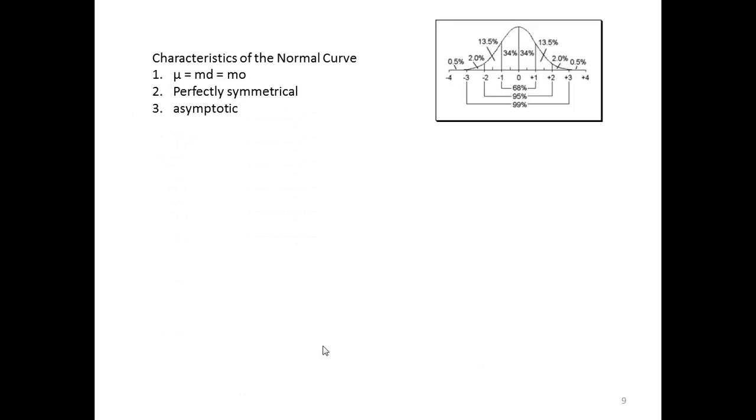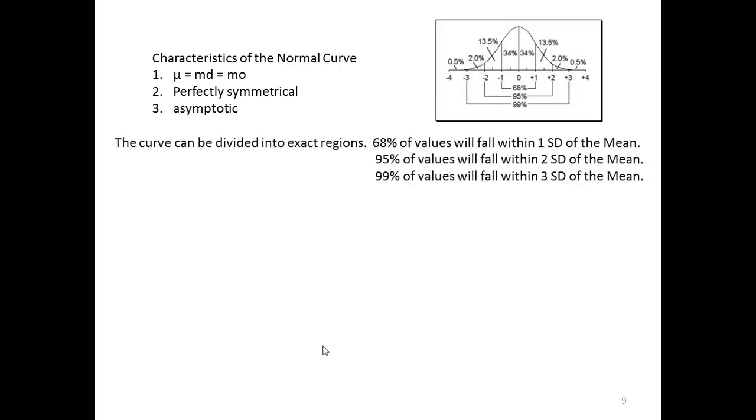So let's think about characteristics of a normal curve in the large population. The mean and the median and the mode are all equal. It's perfectly symmetrical, and the tails are asymptotic. We also know that the curve can be divided into exact regions. 68% of any of the values in our sample are going to fall within one standard deviation of the mean. 95% of values will fall within two standard deviations. And 99% of all the values in a sample should be within three standard deviations of the mean of the larger population.